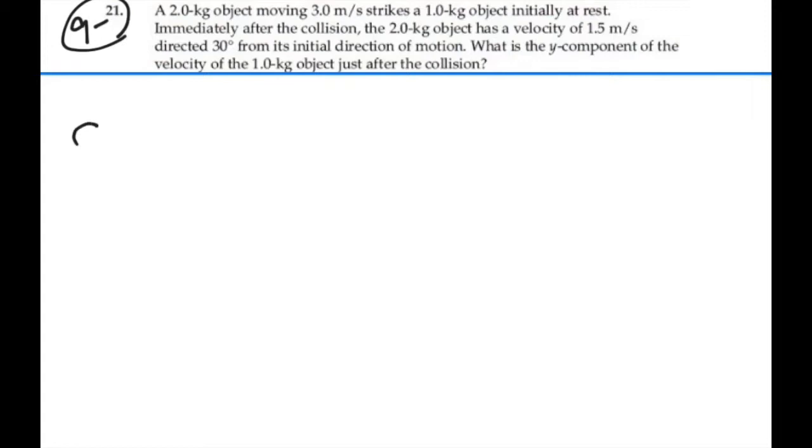So we have a mass 1 which is 2 kg moving in the x direction, v1 initial x, 3 m per second to collide with mass 2 which is 1 kg, initial velocity in the x direction of 0.